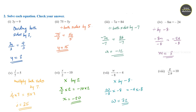Question number 8: j by 2.9 is equal to 10. Multiplying both sides by 2.9, j by 2.9 into 2.9 is equal to 10 into 2.9, that is, j is equal to 29.